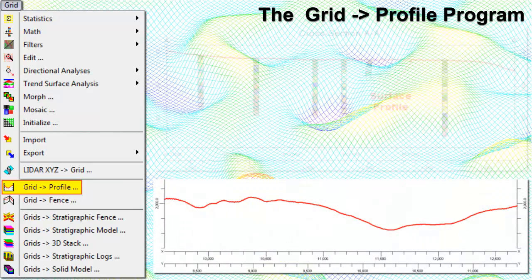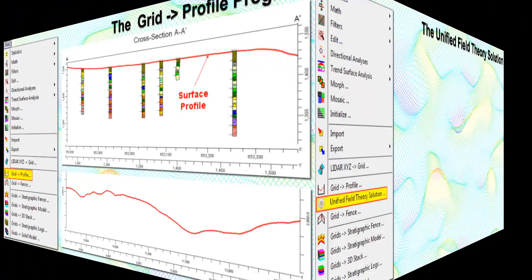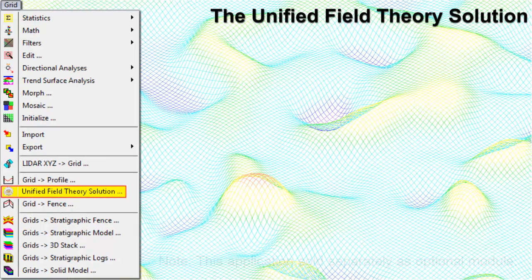The Grid to Profile program creates a single profile cut through a grid model for display as a line profile diagram.